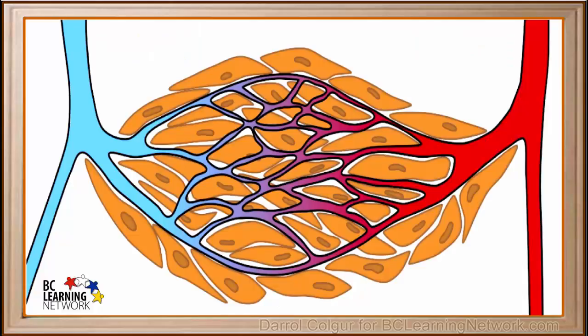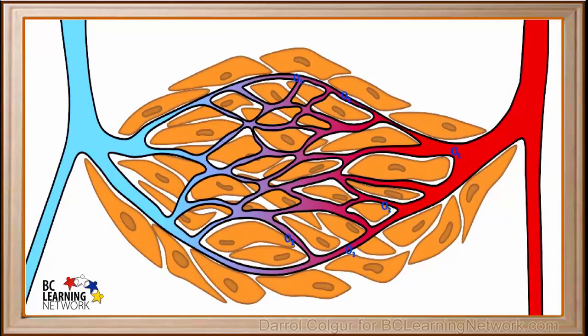These capillaries are very close to muscle cells in the arm. In fact, all cells in the body have to be very close to capillaries in order to receive what they need and get rid of waste products. We see that oxygen enters the capillaries from the artery — we've represented just a few oxygen molecules here, but remember there are actually billions of them. Oxygen then diffuses into the cells.